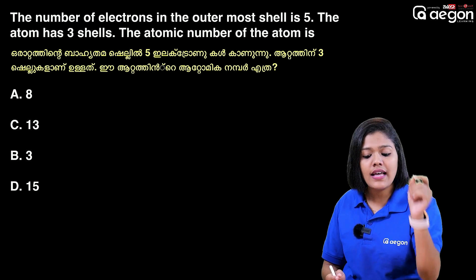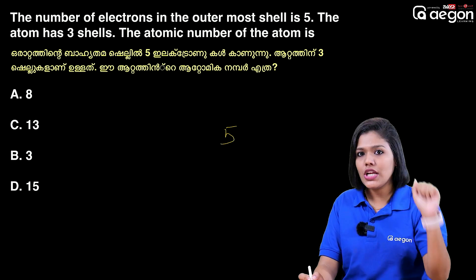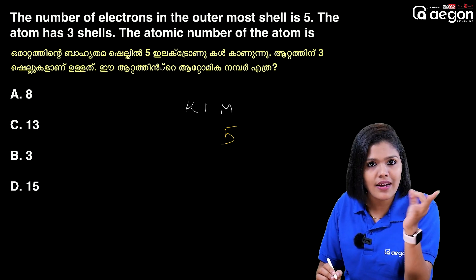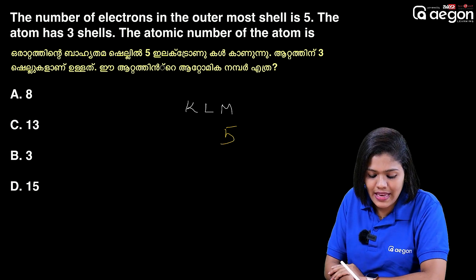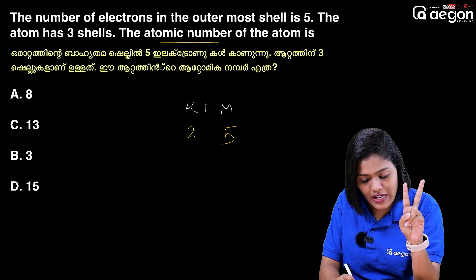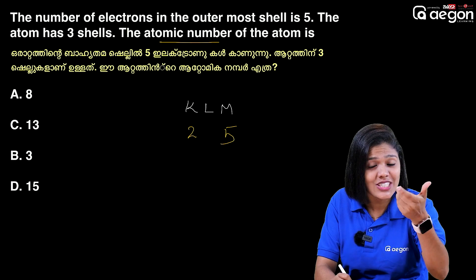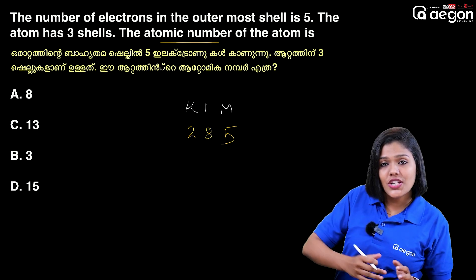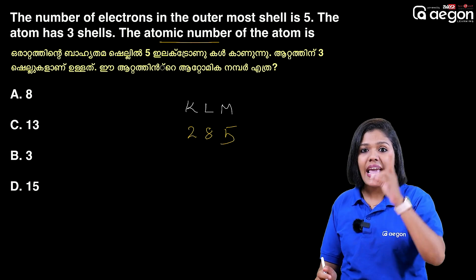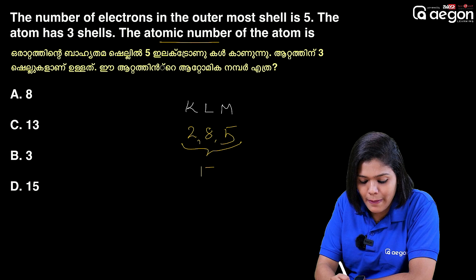The number of electrons in the outermost shell is 5. Outermost shell has 5 electrons. The atom has 3 shells — K, L and M shells. Atomic number: K shell done in outermost shell. The number of electrons: 8 electrons. The shells will be done in the outermost shell: 2, 8, 5. We get 2 plus 8 plus 5 equals 15, and 15 is the answer.